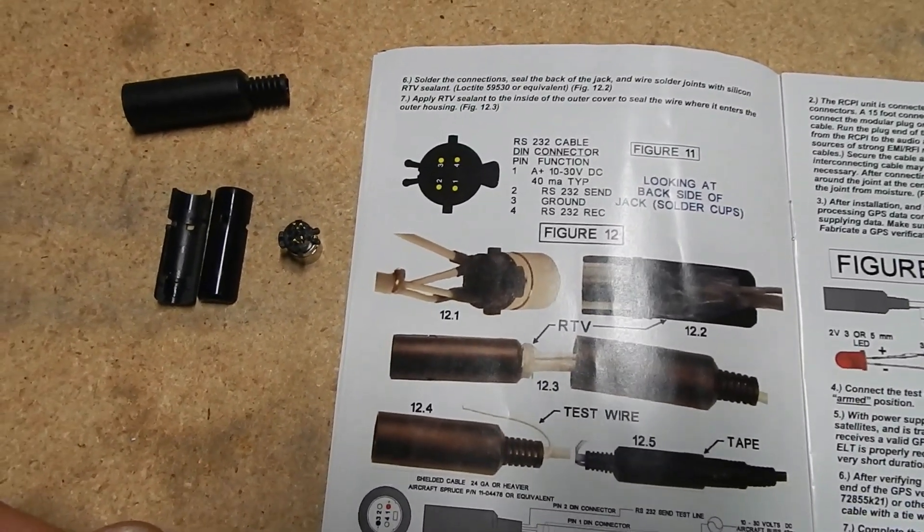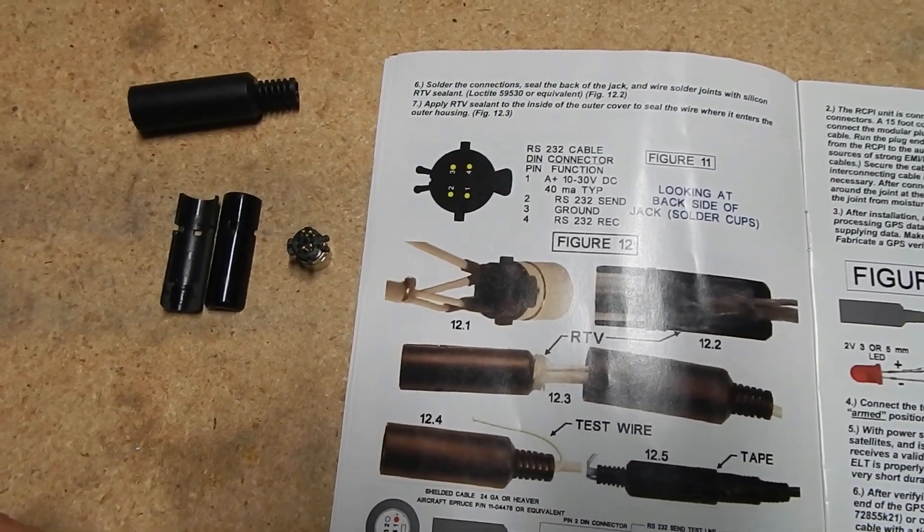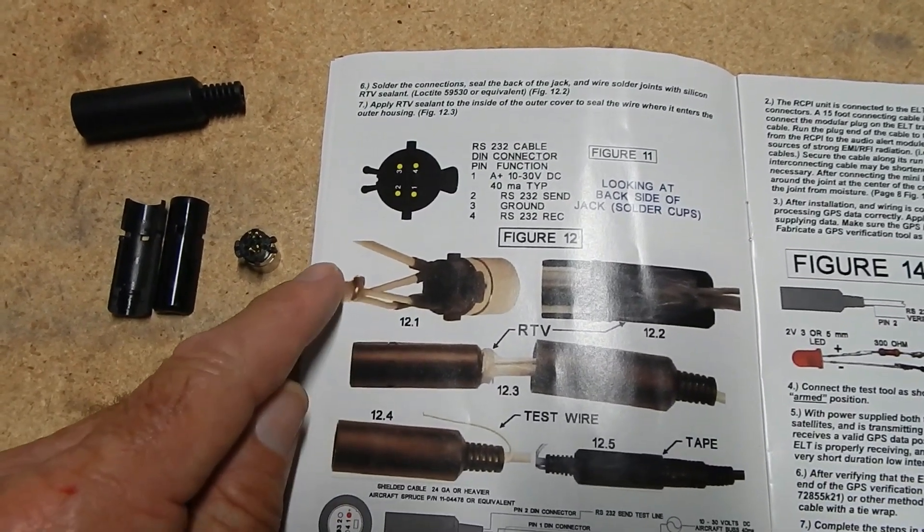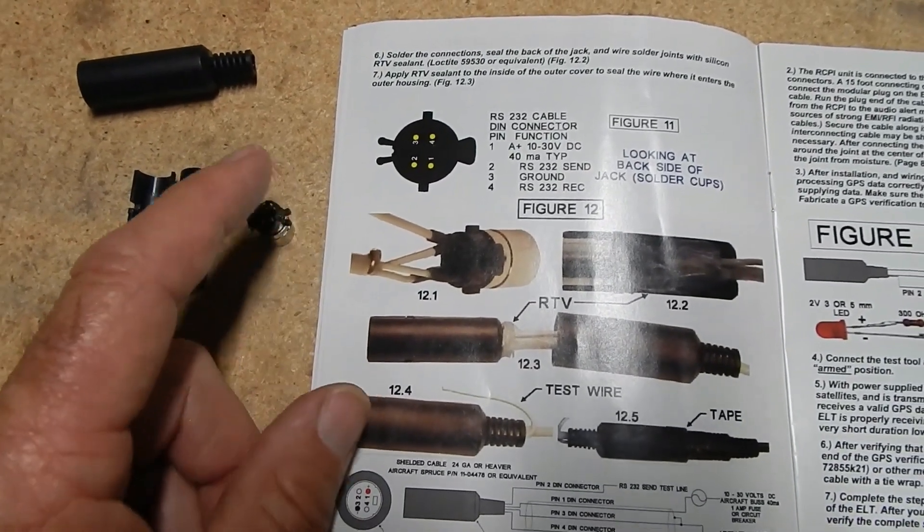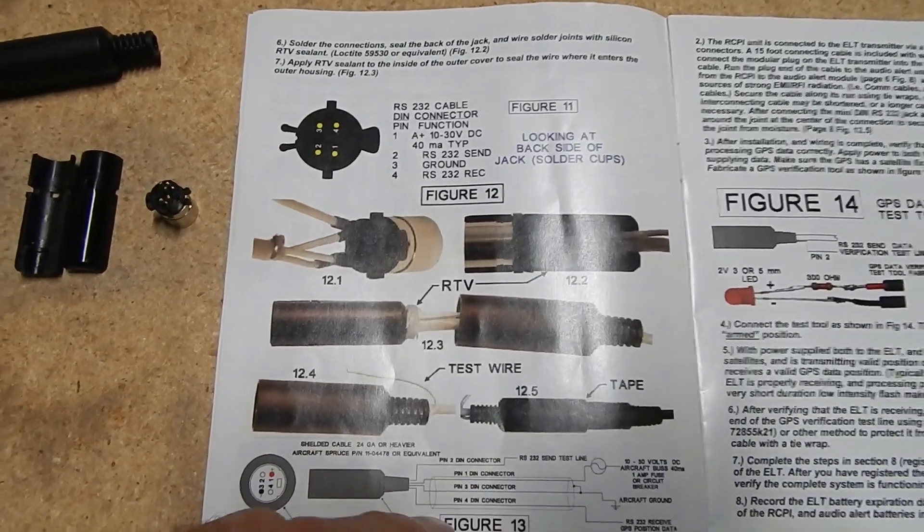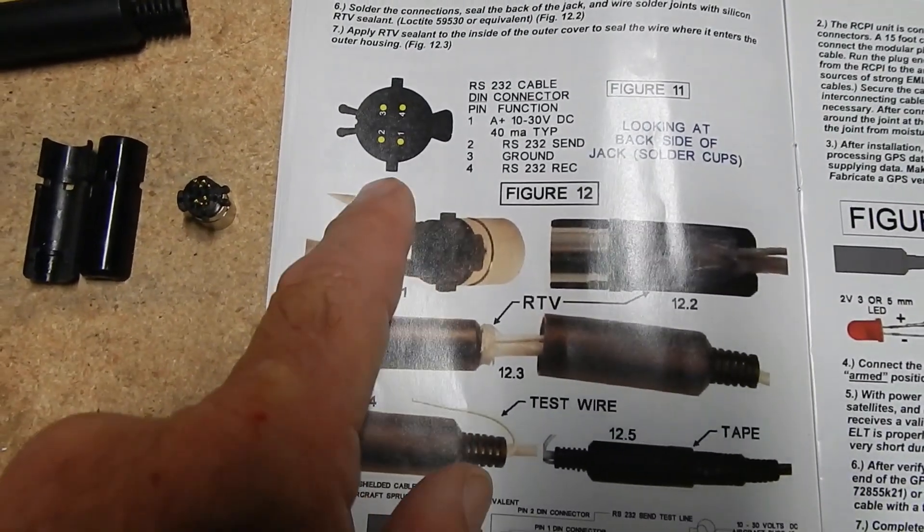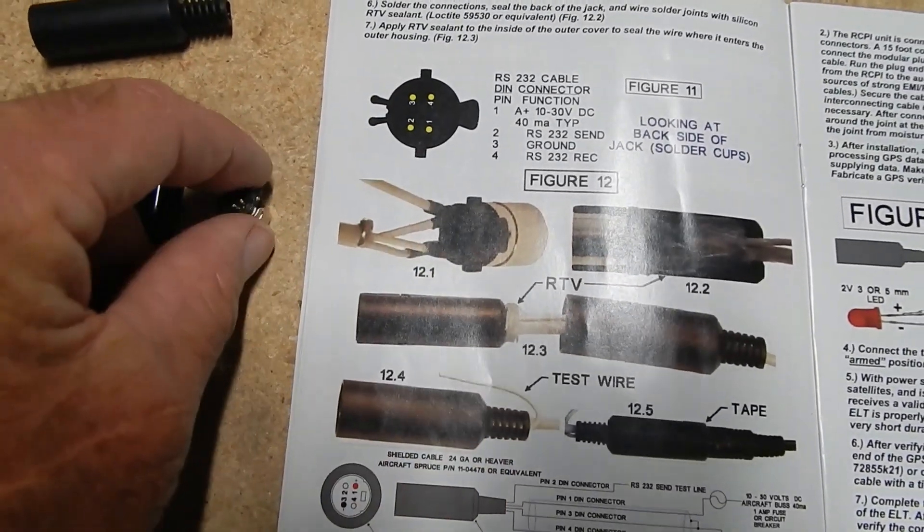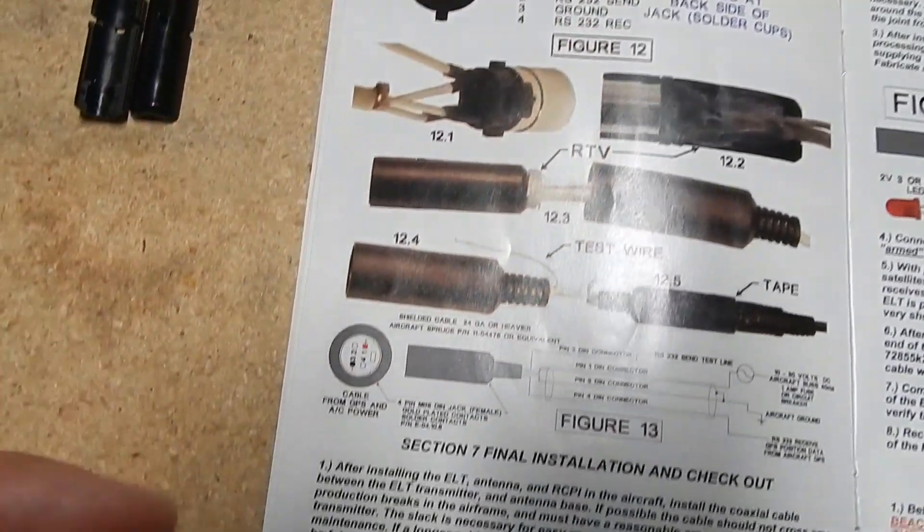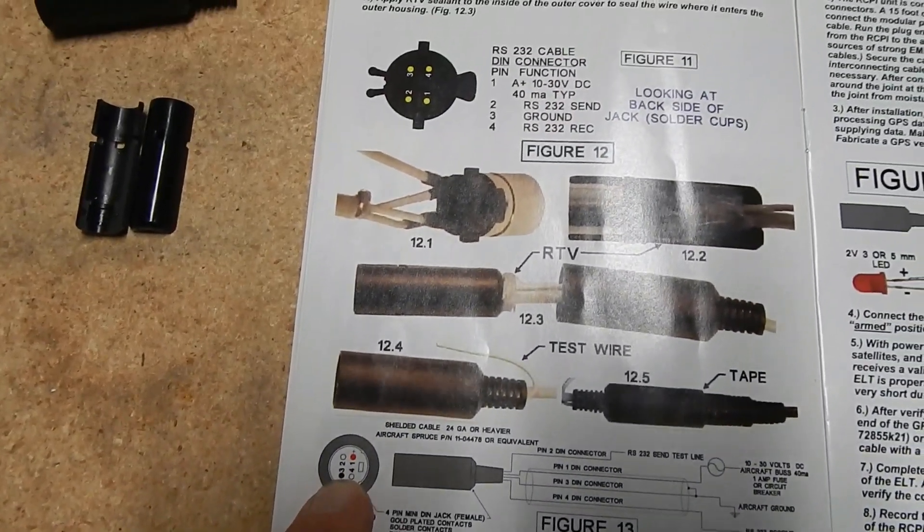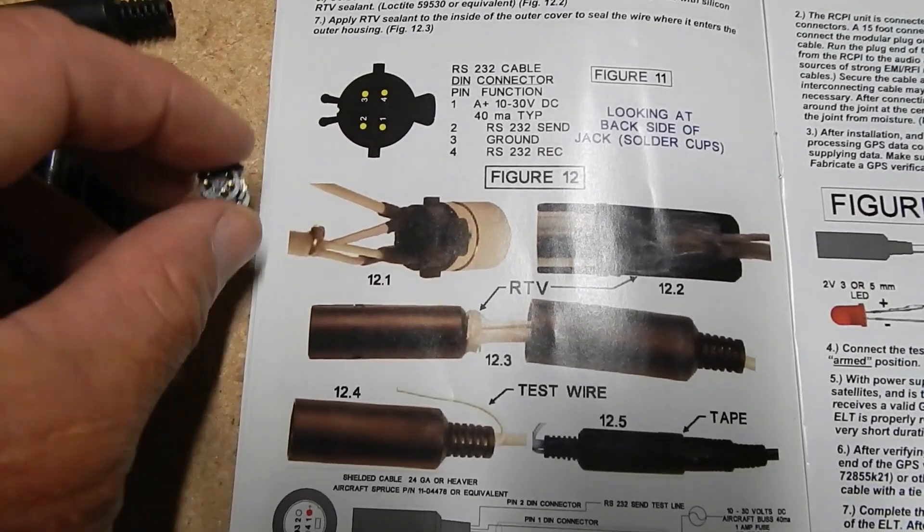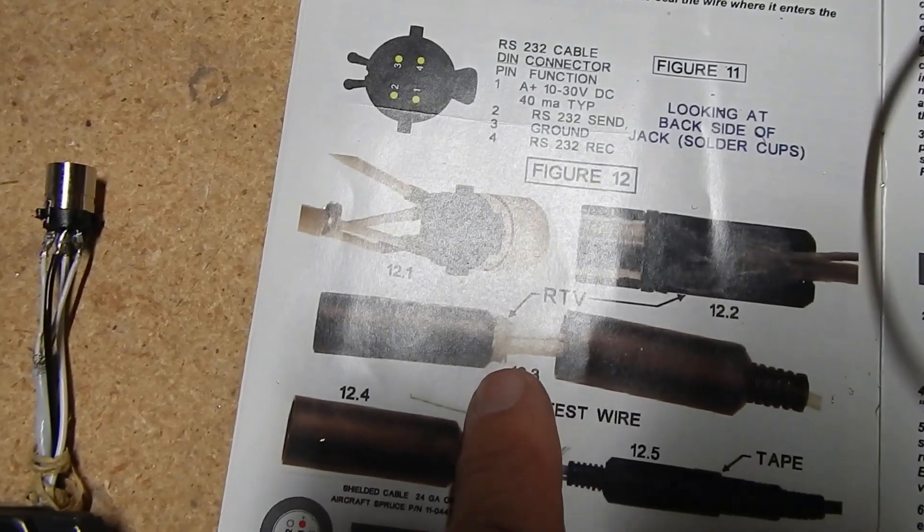While I'm waiting for that one amp breaker to show up, I thought I'd finish the ELT connection. There's an RS-232 cable that comes from the panel that allows the ELT to get GPS information. Based on your configuration, there are different ways it gets hooked up, but this is the basic four wire hookup. They give you this little connector and four wire connectors that need to get soldered.